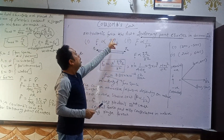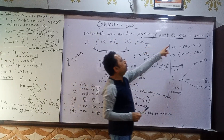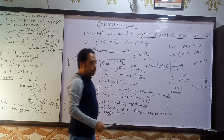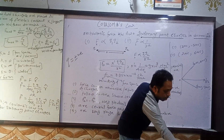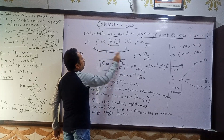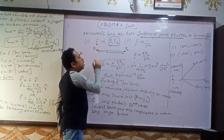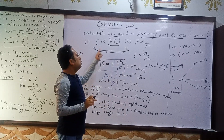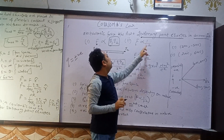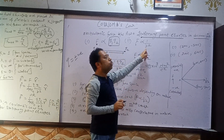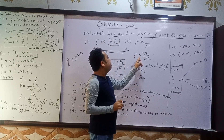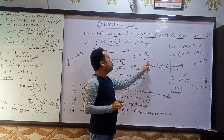The force between two stationary point charges in vacuum - that is, there should be no medium - is directly proportional to the product of the two charges q1 and q2. And also this force is inversely proportional to the square of the distance between the two charges. Combining these two, we get F₀ is directly proportional to q1·q2 upon R square.